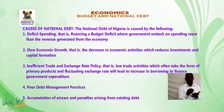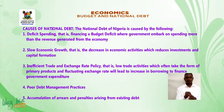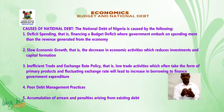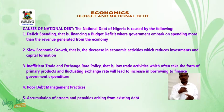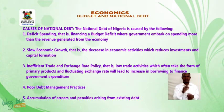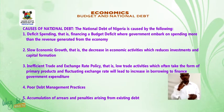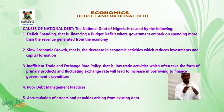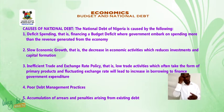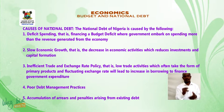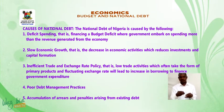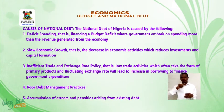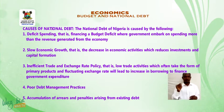Three, inefficient trade and exchange rate policy — that is low trade activities which often take the form of primary products and fluctuating exchange rates, which lead to increased borrowing to finance government expenditure. Four, poor debt management practices. Five, accumulation of arrears and penalties arising from existing debt.